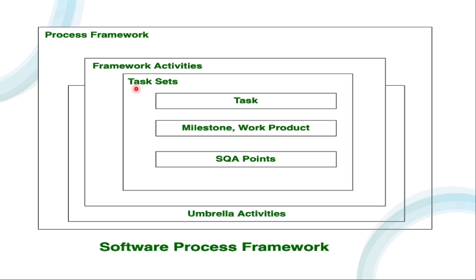For example, we have a library management system design. We have tasks such as creating login, employee add, book add, book return, etc. So all the tasks we are making have certain milestones and work products we define. This is a complete software process framework.